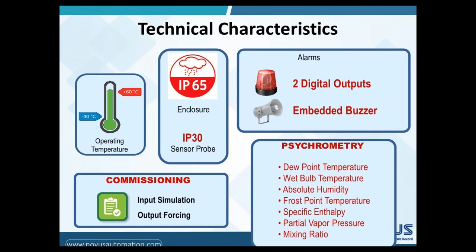The RHT Climate constantly calculates all seven psychometric properties from the measured relative humidity and temperature. Those properties can be presented on the display, transmitted to the analog output, or read from the Modbus table. The seven properties are: dew point temperature, wet bulb temperature, absolute humidity, frost point temperature, specific entropy, partial vapor pressure, and mixing ratio.